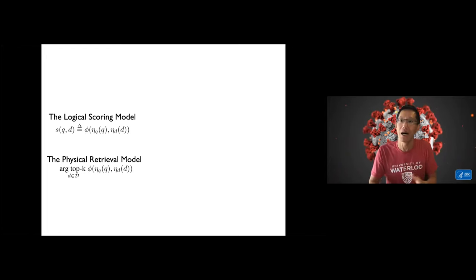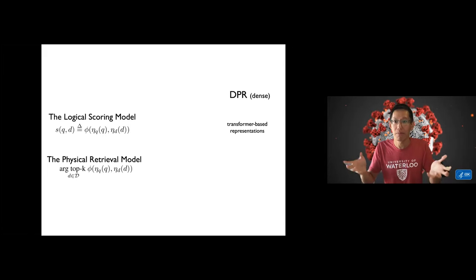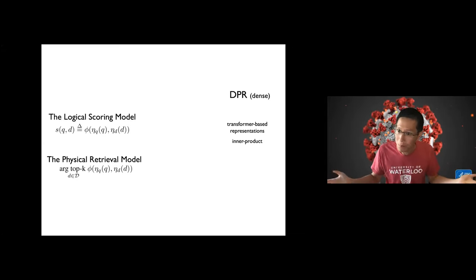I'm going to start with DPR as an illustrative example of dense passage retrieval. So in DPR, the eta functions eta q and eta d are transformer-based representations. You take the text, you run them through the transformer, you get out the representation, and the phi pairwise function there is an inner product. And to perform top k retrieval you would use something like FAISS library from Facebook that implements something like HNSW.